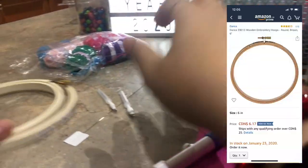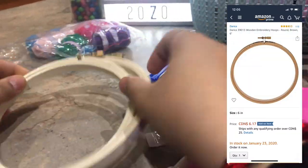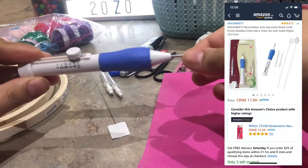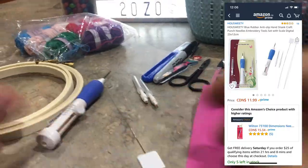Alright, let's get started. First you'll need an embroidery hoop - you can get those on Amazon for like four or five dollars. Then you'll need a punch needle, which I bought for $11.99.